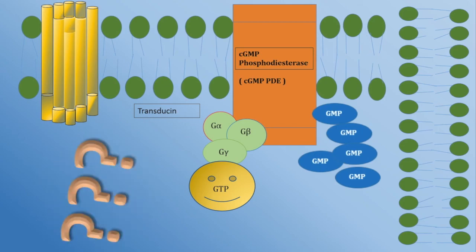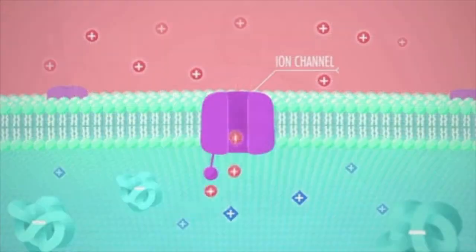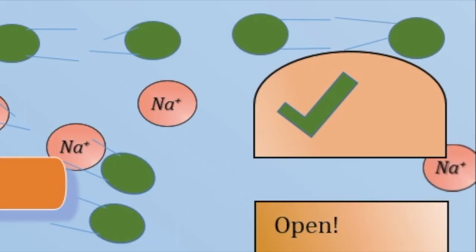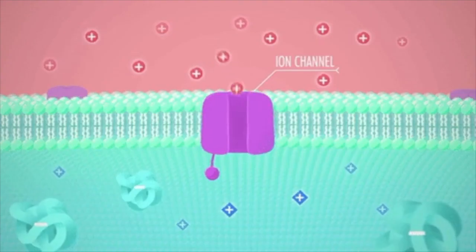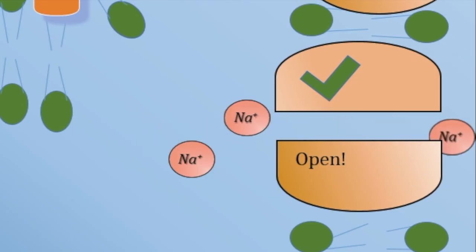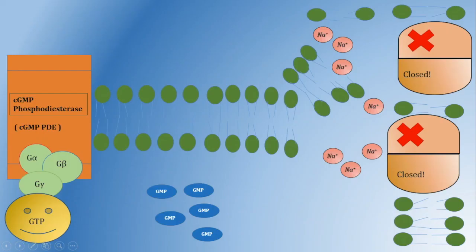Why might this be important? When rhodopsin is inactive in the dark, the high concentration of C-GMP in the cells opens up sodium channels in the membrane. Sodium channels are responsible for coordinating responses from external stimuli to the nervous system. However, without C-GMP, these sodium channels cannot open.